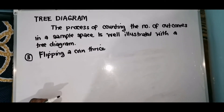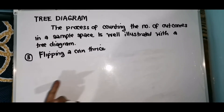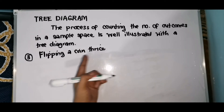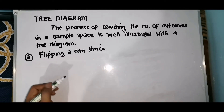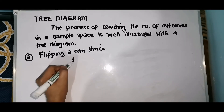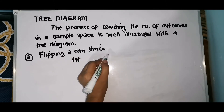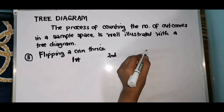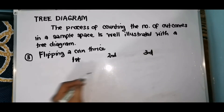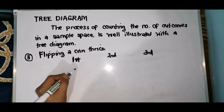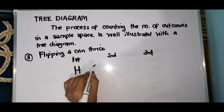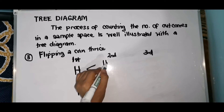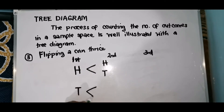For our third example, we are still using a coin — and this is the last coin example. What if you are going to flip a coin thrice — meaning three times? For the first flip, the possible outcomes are head and tail. For the second flip, we again have head and tail branching from each first-flip outcome.